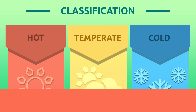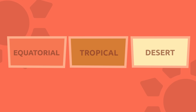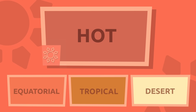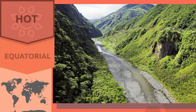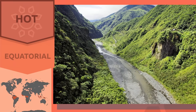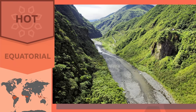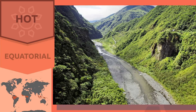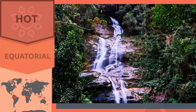We can divide climates into hot, temperate, and cold. Let's learn more about some of them. The equatorial climate, the tropical climate, and the desert climate are all hot climates. The countries near the equator have an equatorial climate.